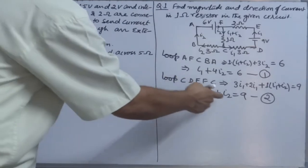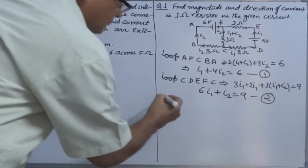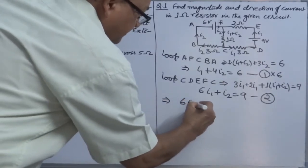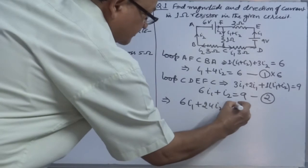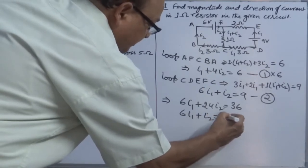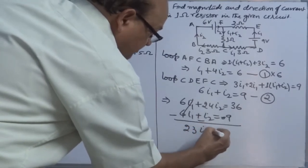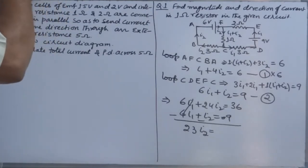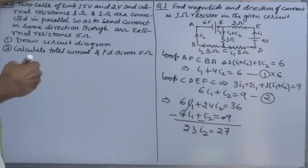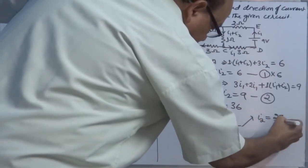To solve: either multiply equation 1 by 6, or equation 2 by 6, then subtract. Multiplying equation 1 by 6 gives: 6I1 + 24I2 = 36. The second equation is 6I1 + I2 = 9. Subtracting, I1 cancels. We get 23I2 = 27, so I2 = 27/23.